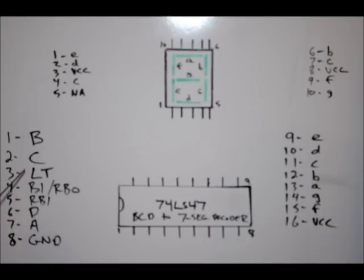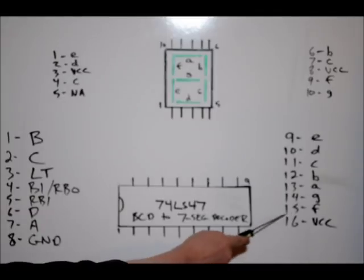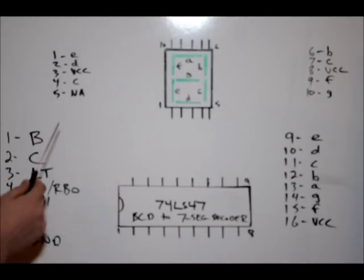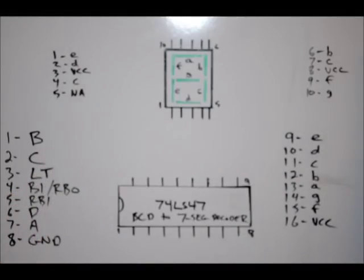There are 3 pins here. LT, RBI, and BI RBO. All we have to do is connect those to 5 volts. Our VCC is pin 16. Our ground is pin 8. So, what we need is a 5 volt supply to power our circuit. And we need to connect these 3 pins to 5 volts. Take our counter pins. And if you watch that video, you'll understand the A, B, C, D outputs of the 74LS93 are connected to pins 1, 2, 6, and 7.